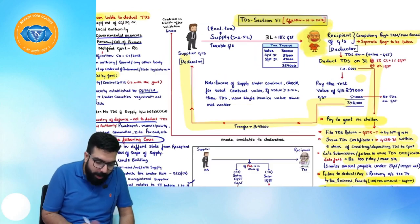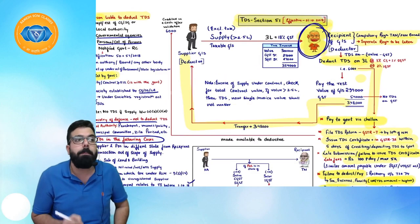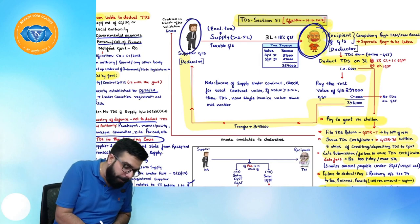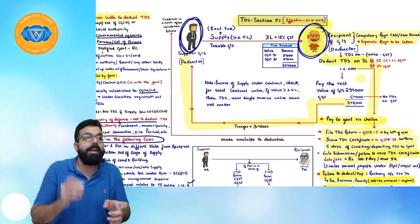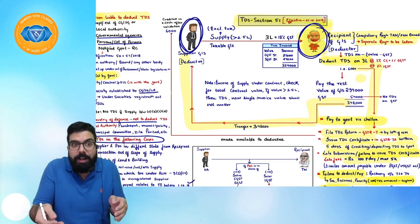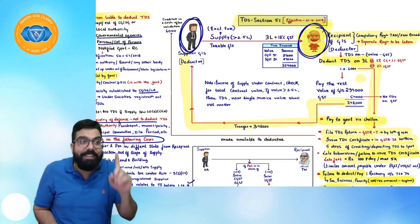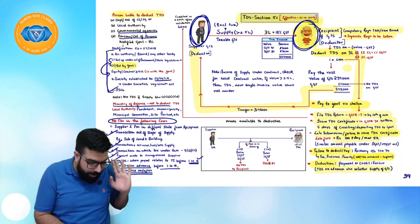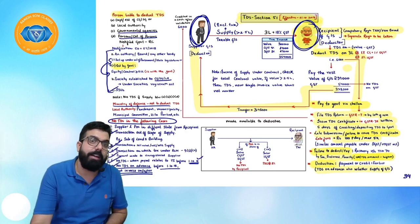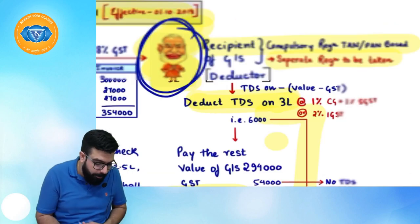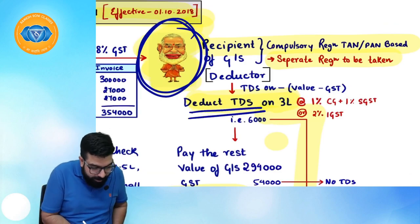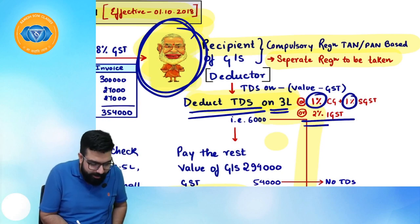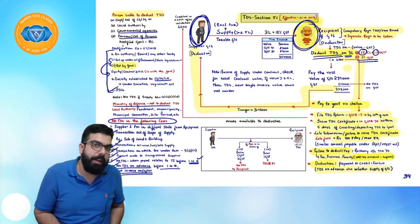When the government department pays TDS, it is made available to the supplier (deductee). The deductee must validate the amount, which will then be credited to their e-cash ledger. TDS rate is 1% under CGST, 1% under SGST, and 2% under IGST.